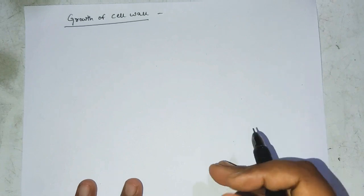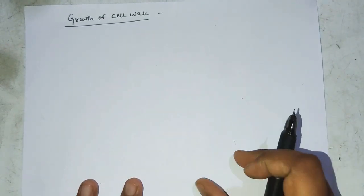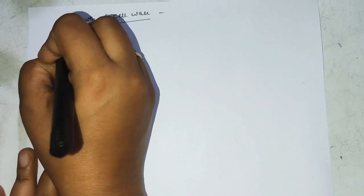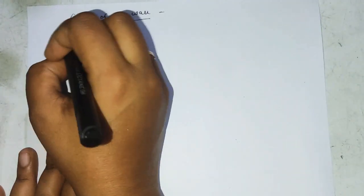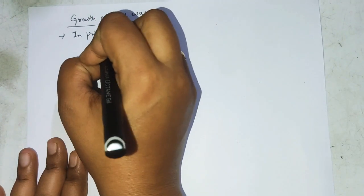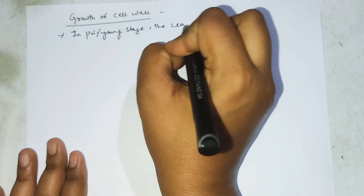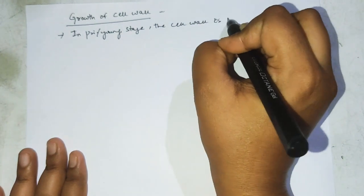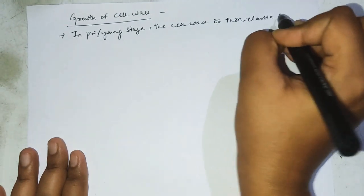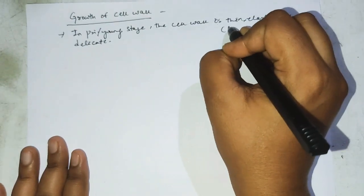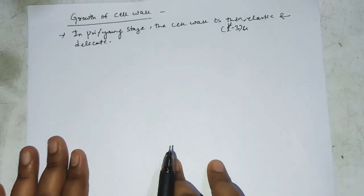Hi viewers, welcome to Botany Point. This video is about the growth of the cell wall. During the growth of the cell wall, in the primary or young stage, the cell wall is thin, elastic, and delicate. Its thickness is about one to three micrometers.